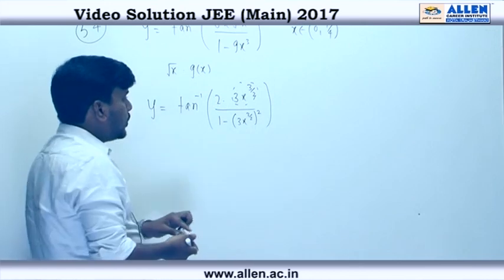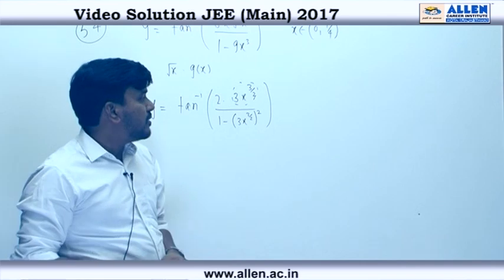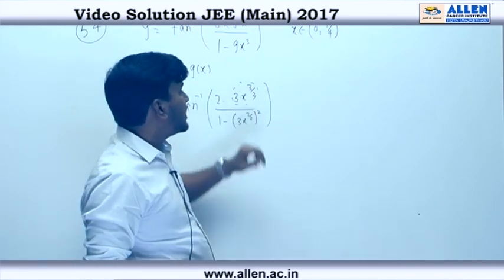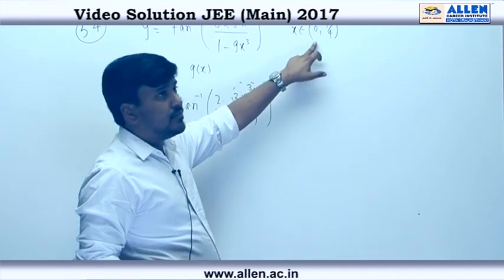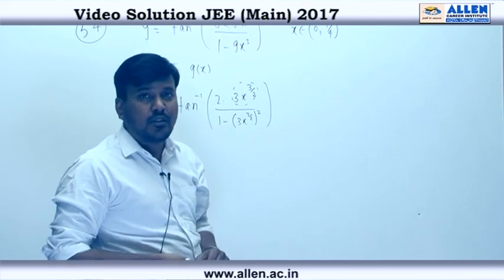It is 2t upon 1 minus t square. Now we check the range of 3x power 3 by 2. So we can see that x is 0 to 1/4, x power 3 by 2 will be lying between 0 to 1 upon 8 and 3 times of that is 0 to 3 upon 8.